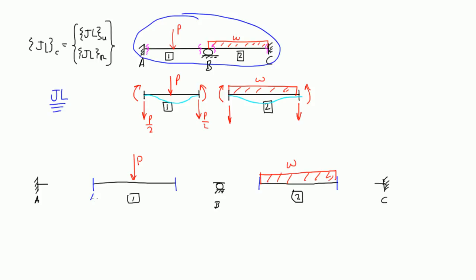With fixed end assumptions, element 1 has shears of P over 2 going up on each end, plus moments at each end. Element 2 has vertical shears on each end and moments at each end as well.